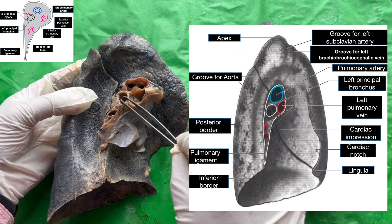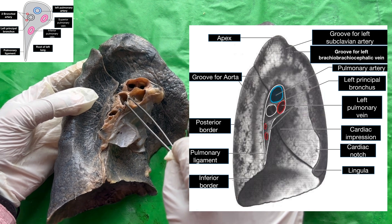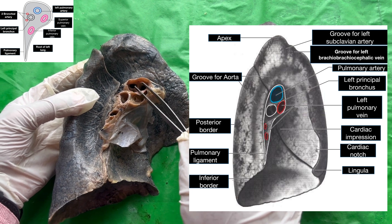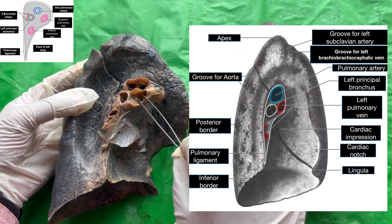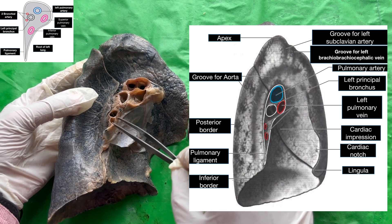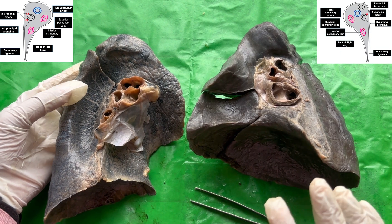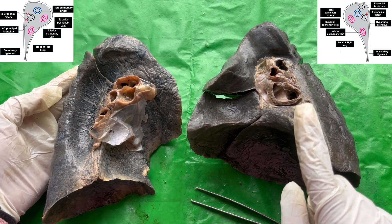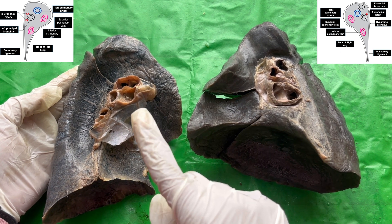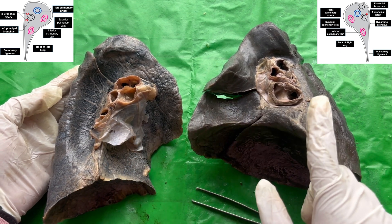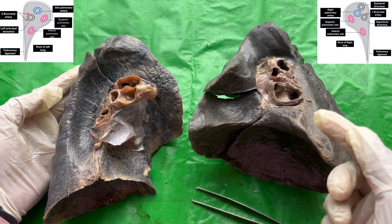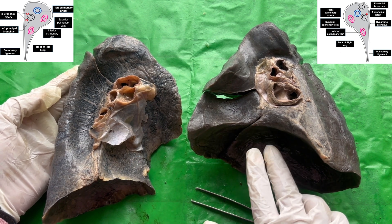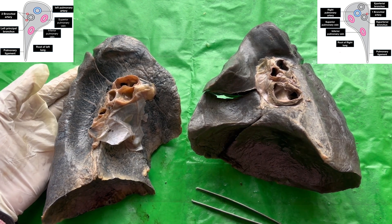Now let's know the contents of the root of the left lung. The structure shown with the forceps is the main principal bronchus. Above this is the left pulmonary artery, and below are the left superior and inferior pulmonary veins. To differentiate the root of the right and left lung: in the right lung there are eparterial and hyparterial bronchi, but in the left side there is only one principal bronchus. In the right side there is one bronchial artery, while in the left side there are two bronchial arteries.